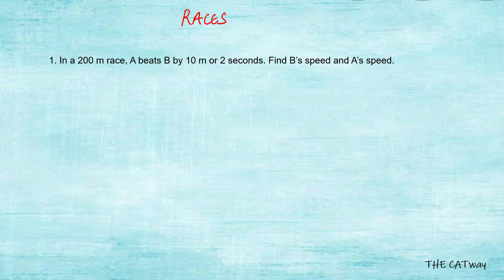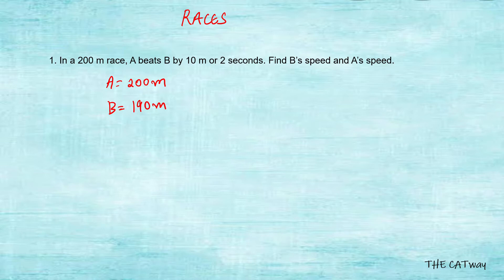Hey guys, welcome to the CAT Way. In this video we are going to solve a few questions based on race tracks. Let's start with the first question: in a 200 meter race, A beats B by 10 meters or 2 seconds. This means that when A completed 200 meters, B completed only 190 meters — there were 10 meters left to be completed.